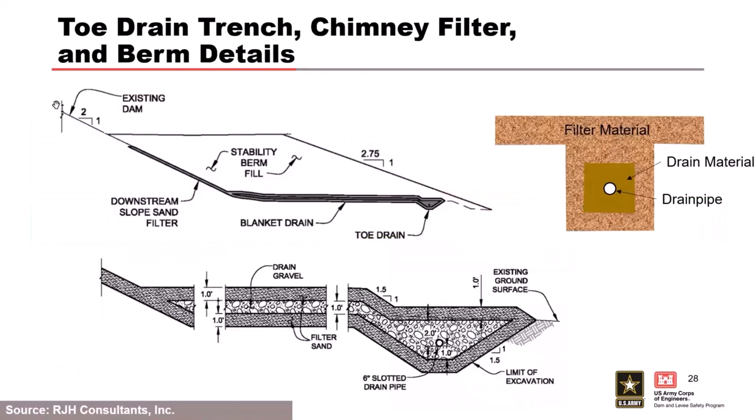Here's a trapezoidal section showing the blanket drain and chimney drain. This particular dam had a single chimney — not a dual — because most of the seepage was coming through the foundation. The embankment was really low permeability, so this was a foundation issue. You can do a trapezoidal section or a more vertical type feature.